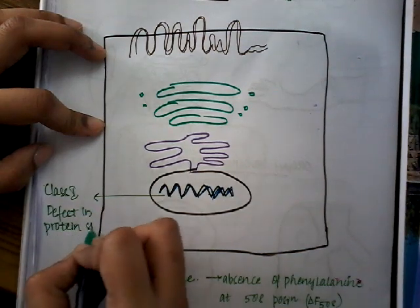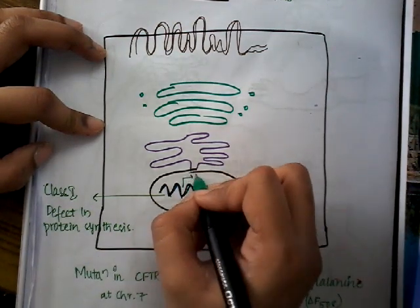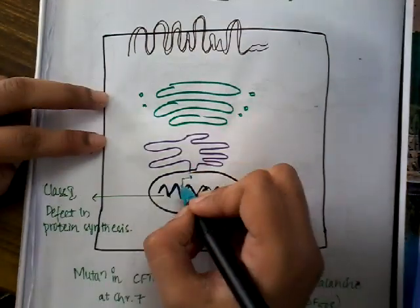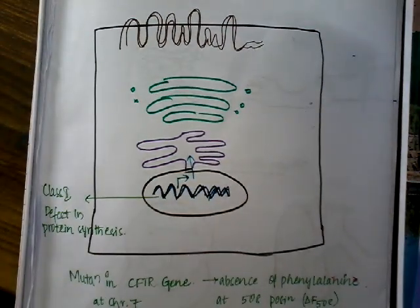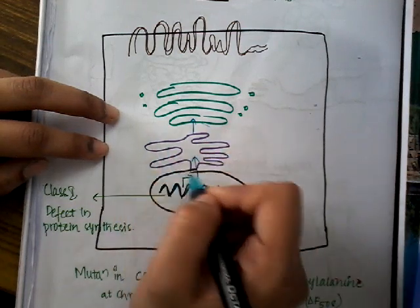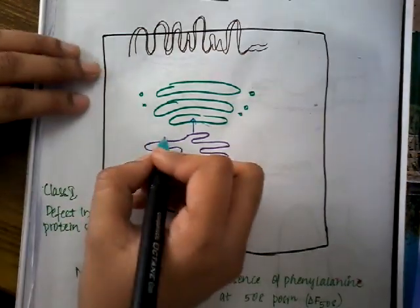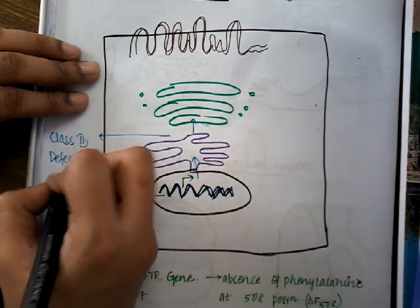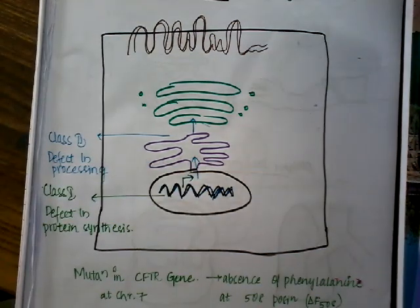If there is no defect in protein synthesis and the synthesized protein enters the endoplasmic reticulum, where it undergoes processing before moving to the Golgi apparatus, but there is some problem in this endoplasmic reticulum to Golgi apparatus packaging process, then it is Class 2. In Class 2, there is a defect in processing the protein.